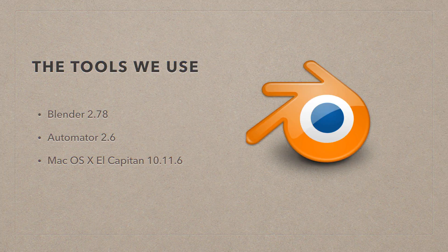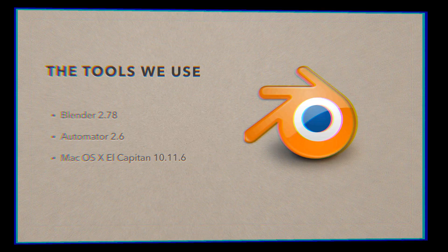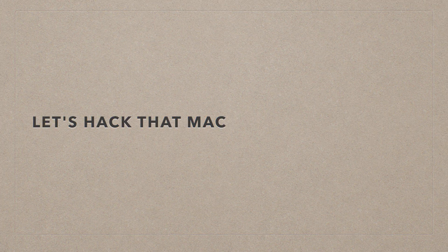The tools I'll use are Blender 2.78 as a demo — replace this with whatever app you're actually going to use. I'll also use Automator 2.6, included in Mac OS X El Capitan. This approach has worked across the last 10 versions of Mac OS X, so it should work with macOS Sierra and beyond. Without further ado, let's hack that Mac.